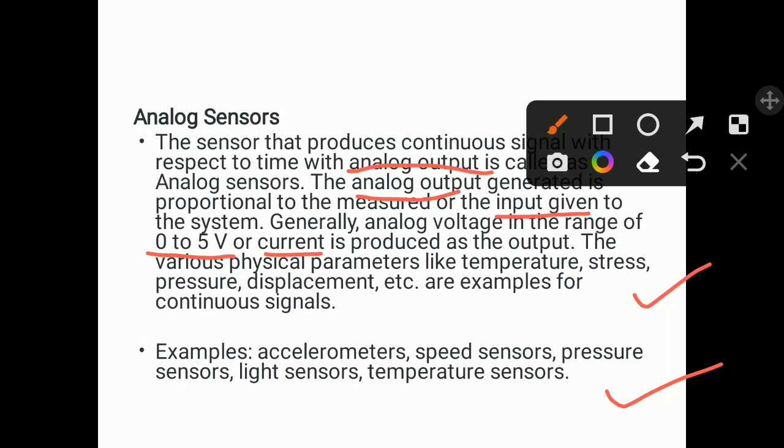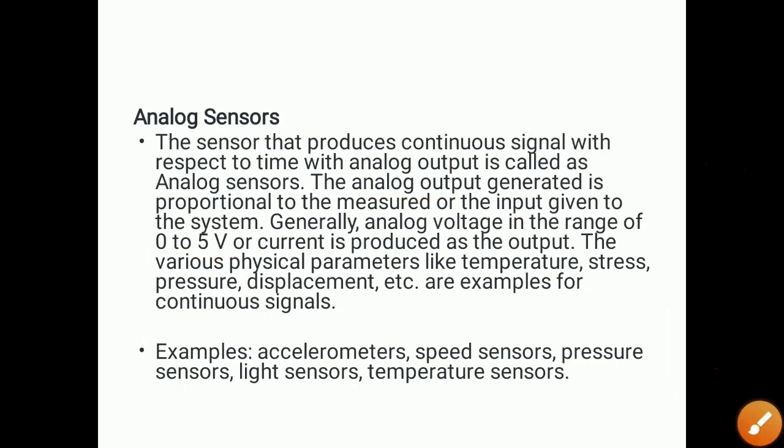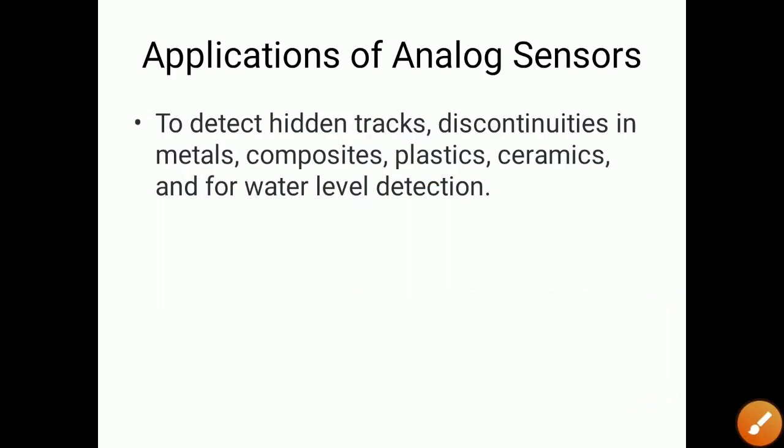Applications of analog sensors include detecting hidden tracks and discontinuities in metals, composites, plastics, and ceramics, as well as water level detection. These continuous signals from analog sensors can be used to monitor various physical parameters across different materials.